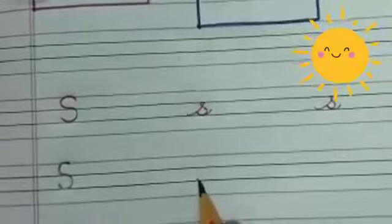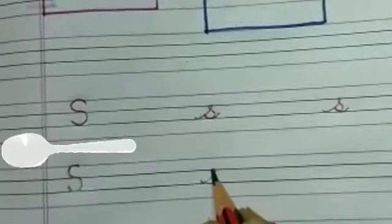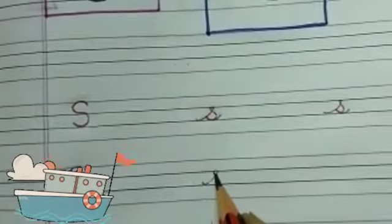For small s, put a dot on the lower blue line. Start a little bit upper from the dot, go up and touch the upper blue line. Then make a small circle.